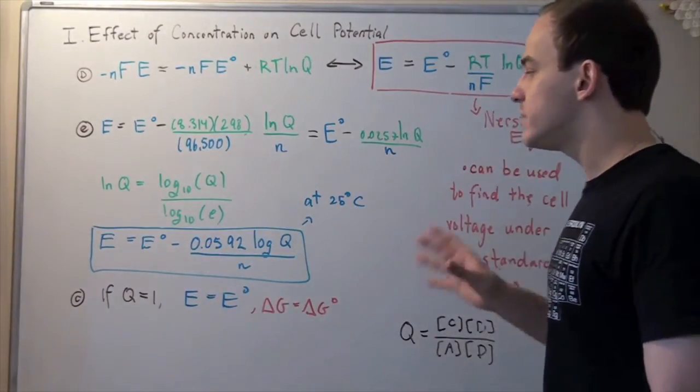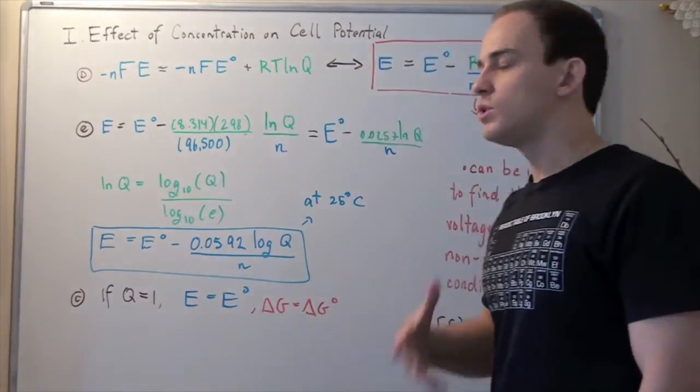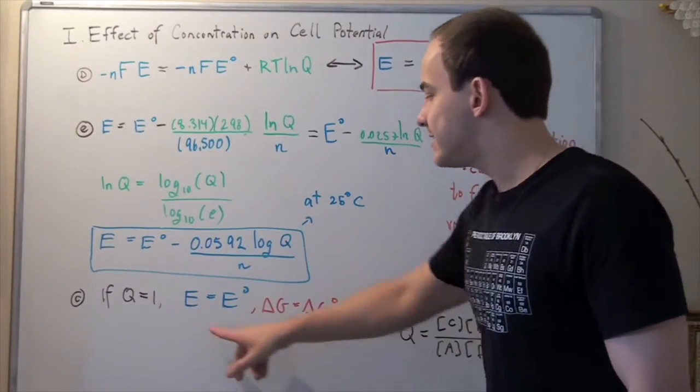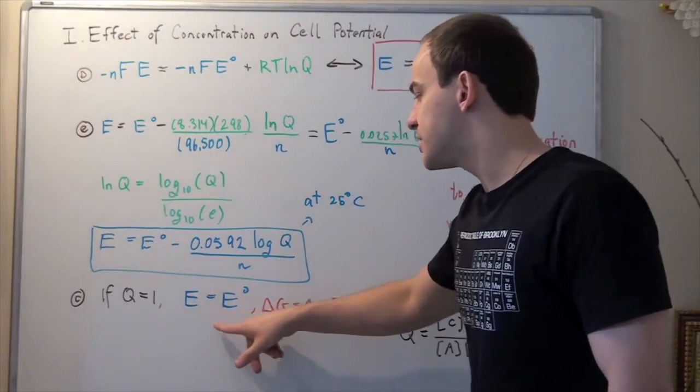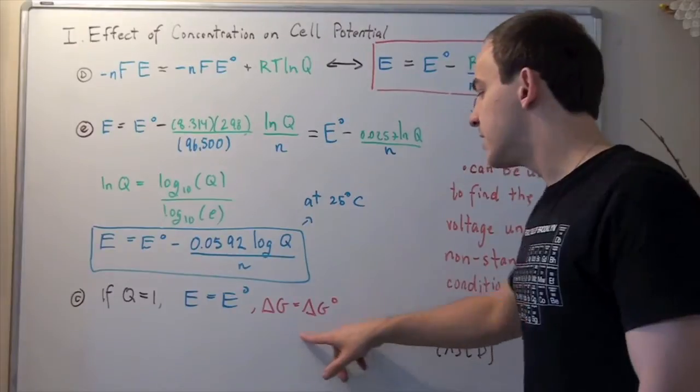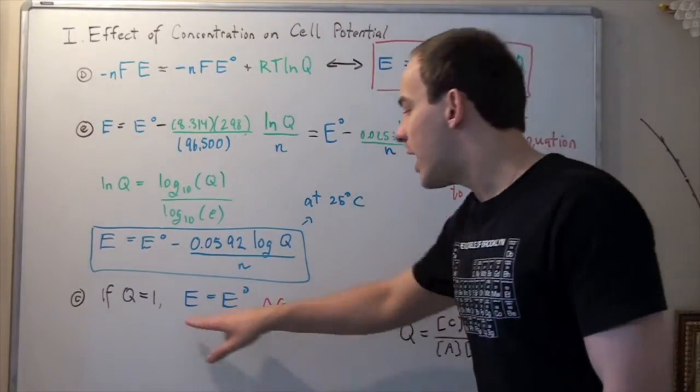Now, last thing I want to mention is notice that if Q is equal to 1, that means our log of 1 is 0. So what we get is our cell voltage is simply cell voltage under standard state conditions, and that means this holds true as well.